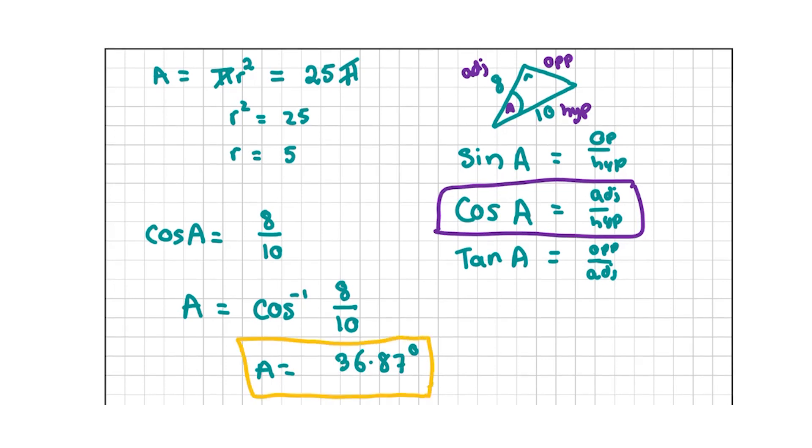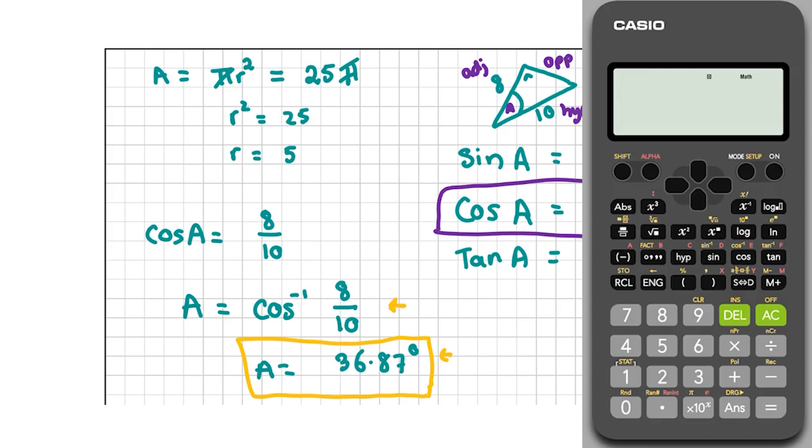Now, just one small thing. If you're putting this into your calculator and you're not getting this answer, your calculator might be in radian mode. It needs to be in degree mode. You can see up the top of my calculator that small D there. If that is an R on your calculator, you're going to press shift and then the mode setup button. You can see setup is in yellow there. Then press 3 for degree, and then you should get the right answer.